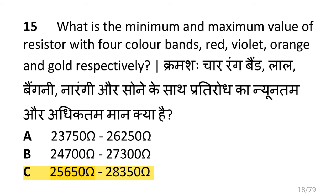What is the minimum and maximum value of a resistor with four color bands — red, violet, orange and gold respectively? The answer is 25,650 ohms and 28,350 ohms.